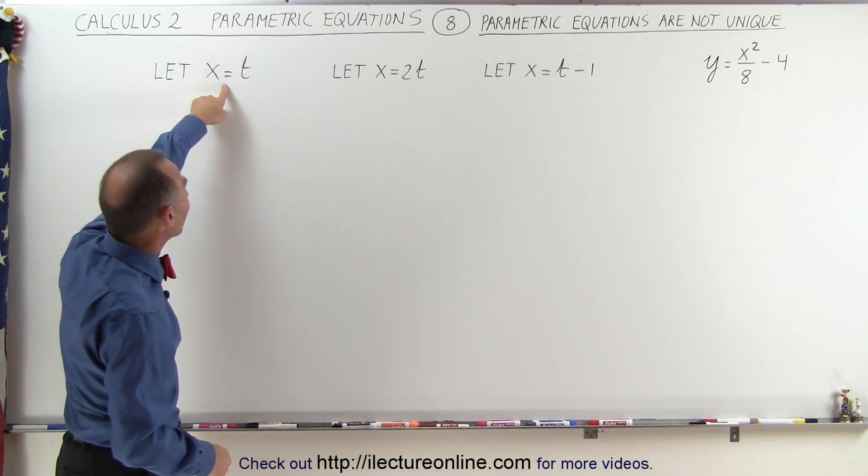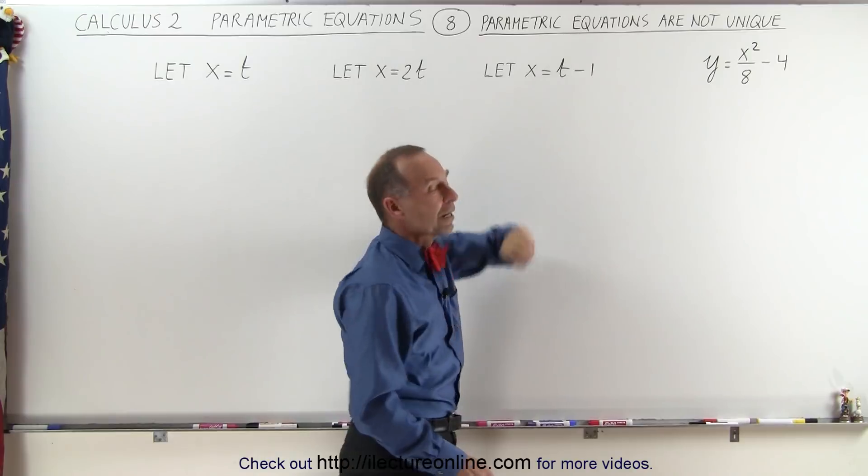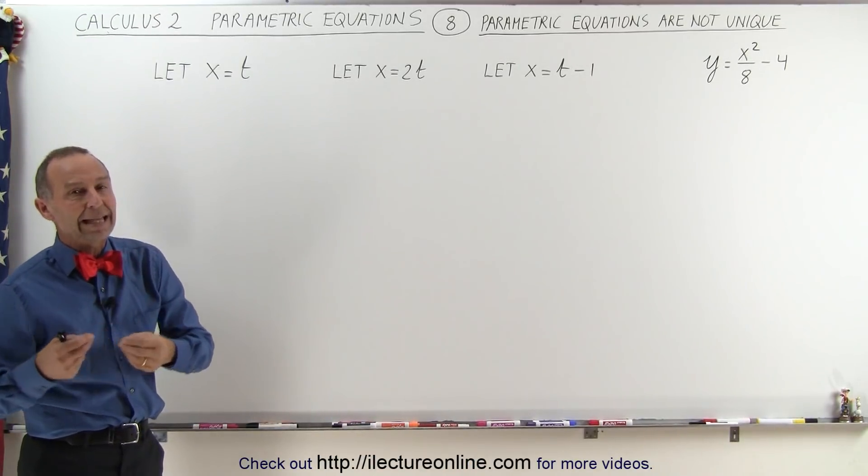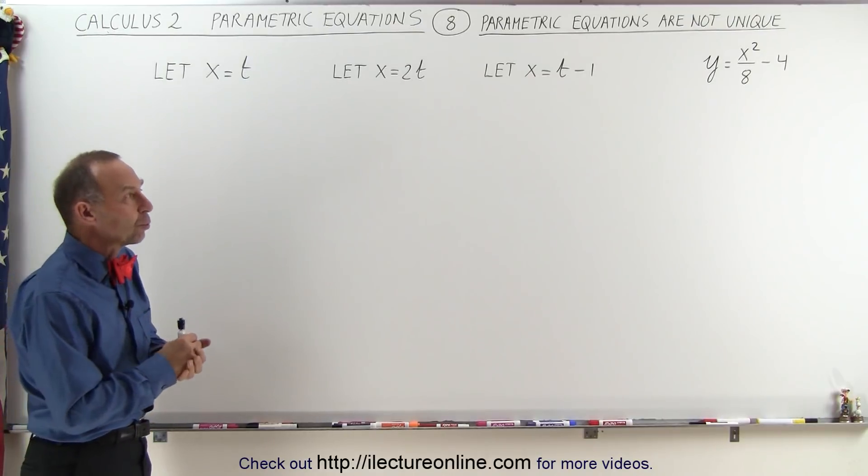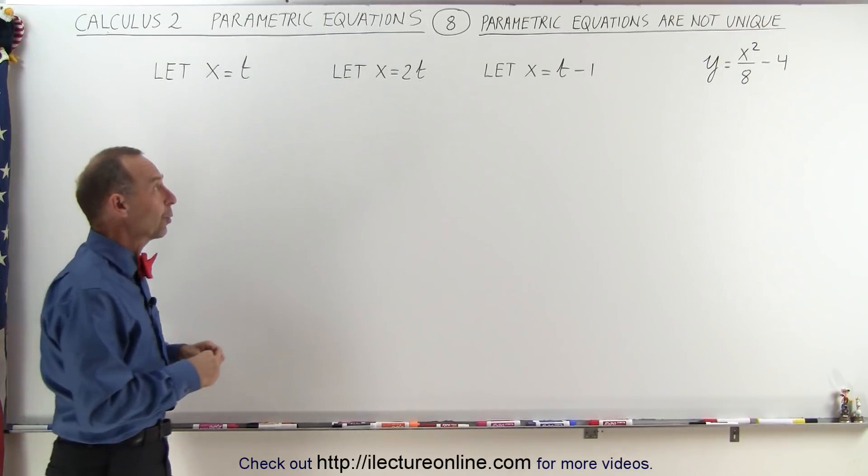We're going to have x = t, x = 2t, and x = t - 1. You first start out with an equation where x is a function of t, and then you find a corresponding equation where y will be a function of t, and that will give you the set of parametric equations.